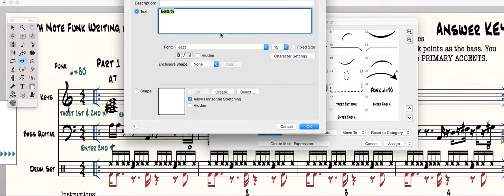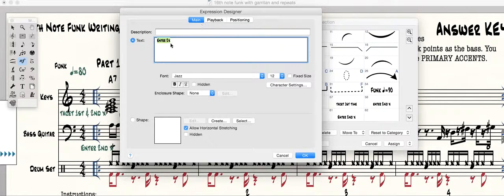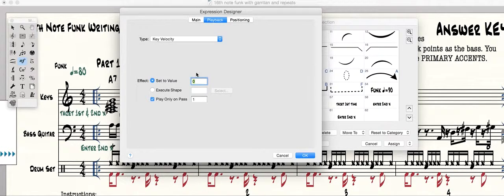Then you get this window, and you go to playback and set it to zero and play only on pass one. What that will do is start it off as muted.